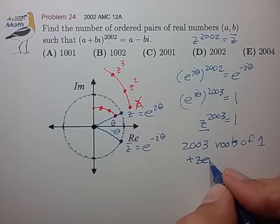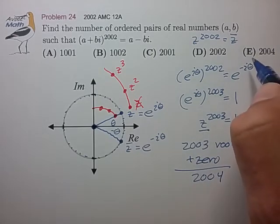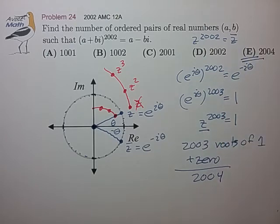If we actually choose Z at the origin, that also satisfies the problem statement. So we have to add 0 to our list of solutions. This gives us 2004 in total for choice E. Hope that was clear, and we'll see you at the next video. Bye!